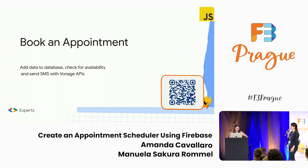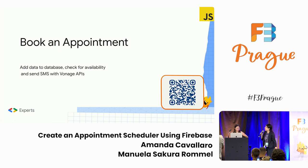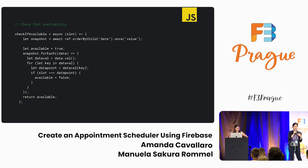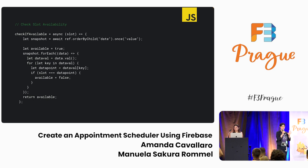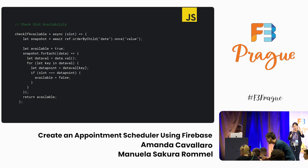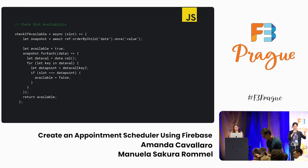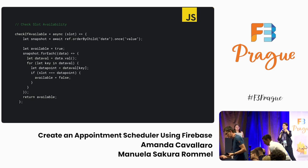To book an appointment, there are a few things we have to do: add data to the database, check for availabilities, and send SMS with the Vonage APIs. We first start with a function to check if a slot is available. You have this slot you're trying to add — we check if it already exists on the real-time database. If it doesn't exist, great, let's add it. If it does, it will not be able to be added.